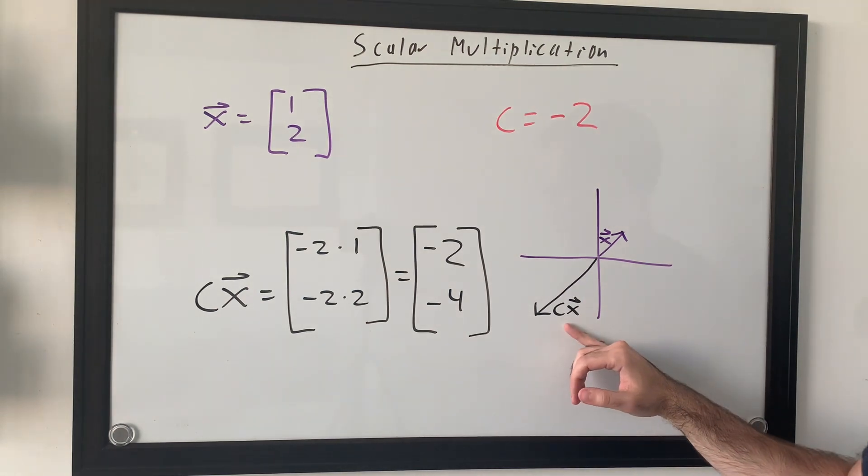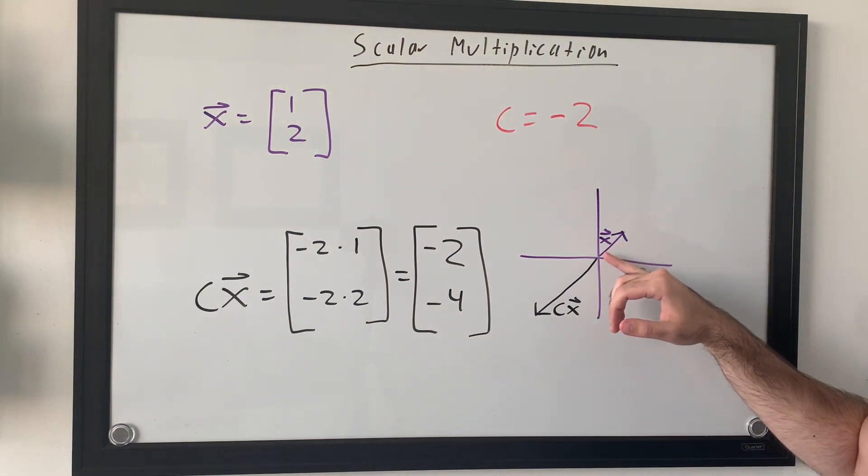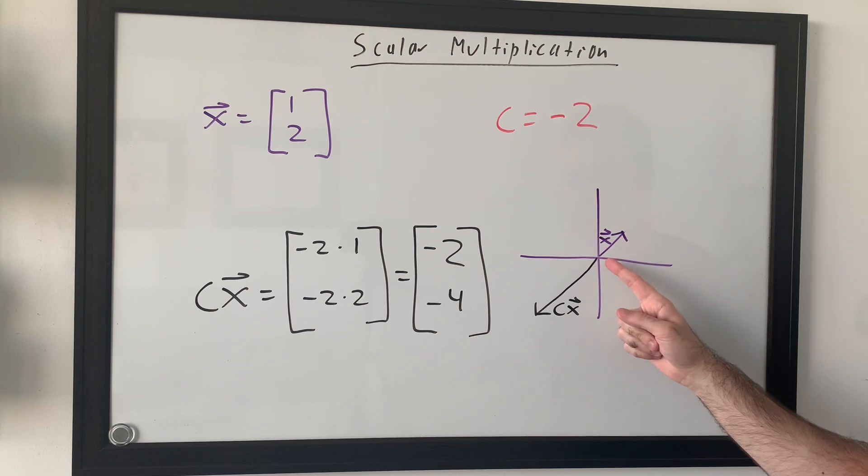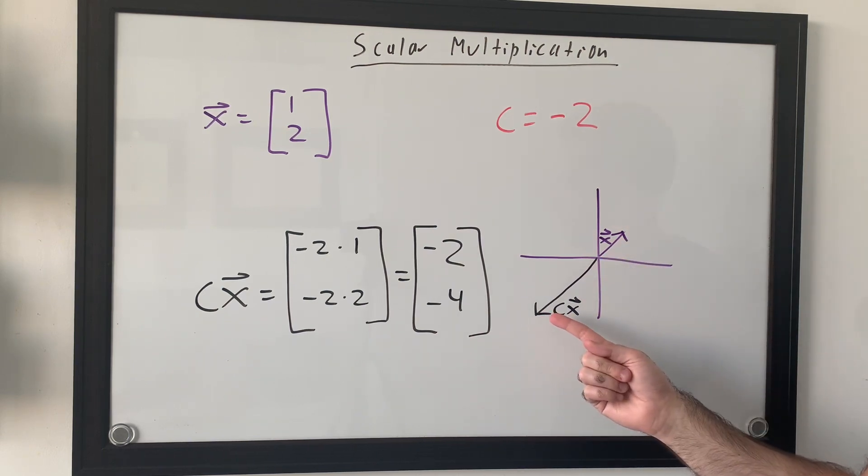And visually, geometrically, what we see is that we're taking our X, flipping it using the negative, flipping the direction it goes, and then doubling how far it ends up going.